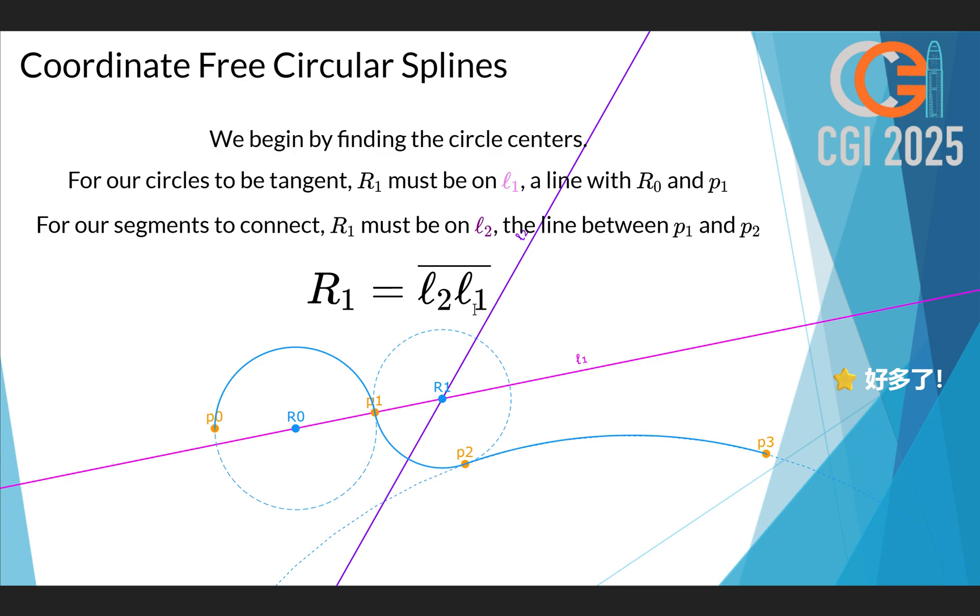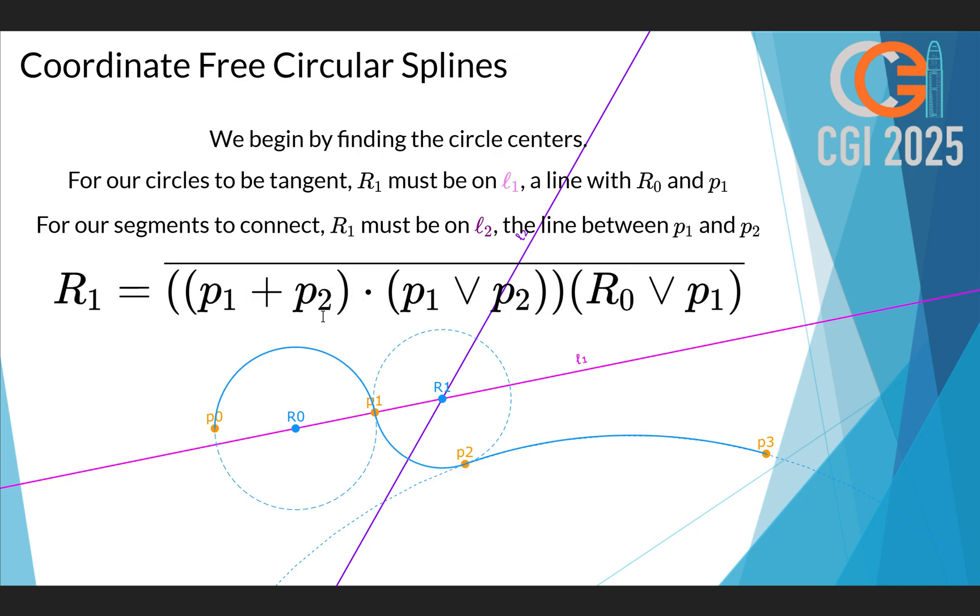And constructing these lines, of course, in geometric algebra is also going to be super easy. To find line L1, all we need to do is join R0 and P1. And to find line L2, we can actually add both points, which would give us the point halfway. And then we can take the inner product of this halfway point with the line between the two points to find L2. And that's also exactly how we'll do it. We sum the two points and we take the inner product with the line between the two points. So this gives us our formula. No trigonometry, no coordinates, no angles whatsoever. Very nice.